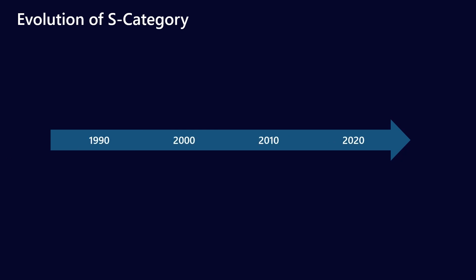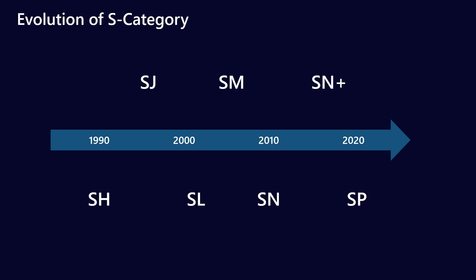Let's look at the evolution of the S category. Going back to the 1990s, we had the SH version of passenger vehicle oils, and then it went to SJ, SL, SM, SN. Then we had an interim SN+, which was followed by SP — the new regulation that came out in 2020. At each of these intervals, new tests and requirements were introduced. With SH there was one additional test; SJ, one; SL, four; SM, one; SN, one; SN+, one. What's unusual about the new SP or ILSAC GF6 formulated oils is that we're adding an additional seven tests, which is why it's been delayed a couple of times and been so difficult for lubricant manufacturers to meet.